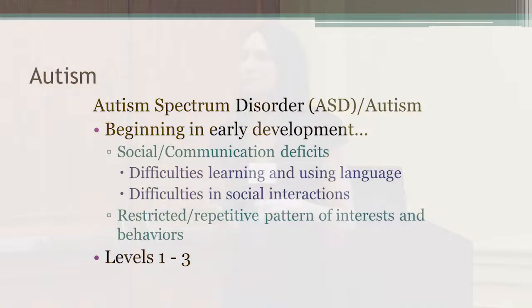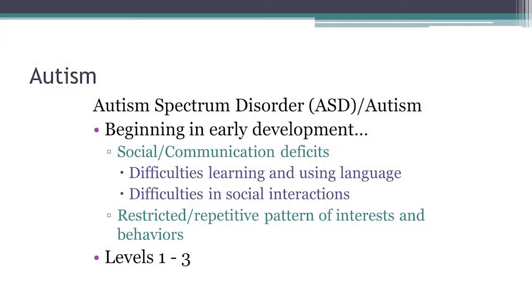Autism is defined by two primary characteristics. Those are deficits in social and communication skills. Communication is probably the most important type of social skill that we have, so that social deficit is the first piece. The second piece is engagement in restricted repetitive pattern of interests and behaviors — stereotyped repetitive behaviors and social deficits involving communication. Those are the two primary defining features of autism.